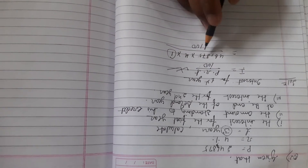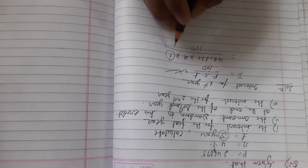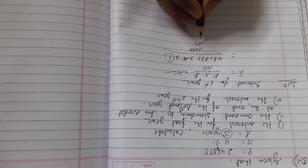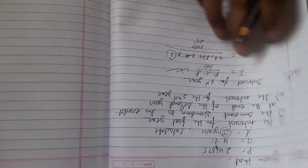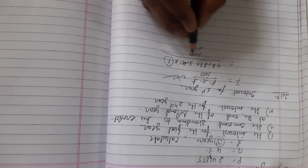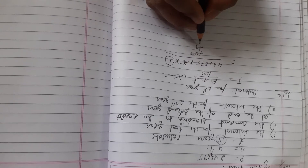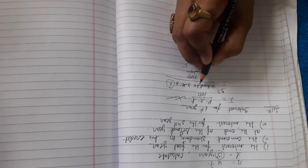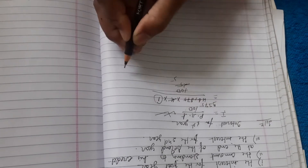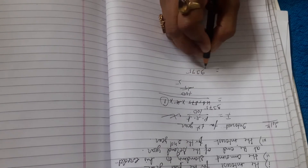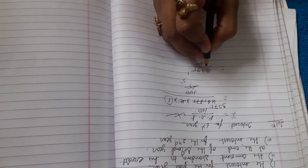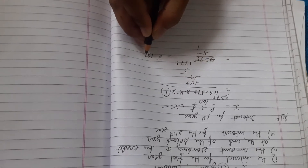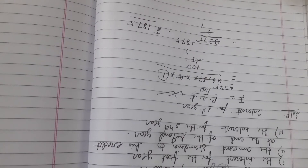So 46,875 into 4 upon 100 — we will reduce the numbers. I am doing all the calculation in front of you so that it becomes a habit for every learner. Instead of using a calculator, solve the calculation part on your own. After simplification, the interest for the first year is rupees 1,875.